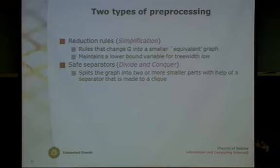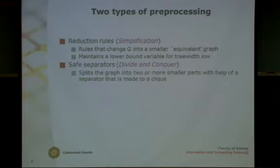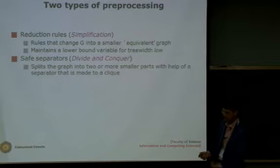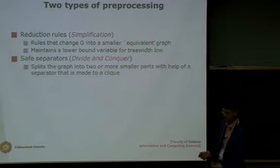For tree width there are actually two types of preprocessing. One I would call reduction rules and the other safe separators. Reduction rules are a kind of simplification: you take the graph, apply some rule which changes the graph locally making it a little smaller, then repeat until you cannot do it anymore. Safe separators work differently: you take a separator in the graph and split on it. I will go into both of these types of preprocessing rules in the talk.